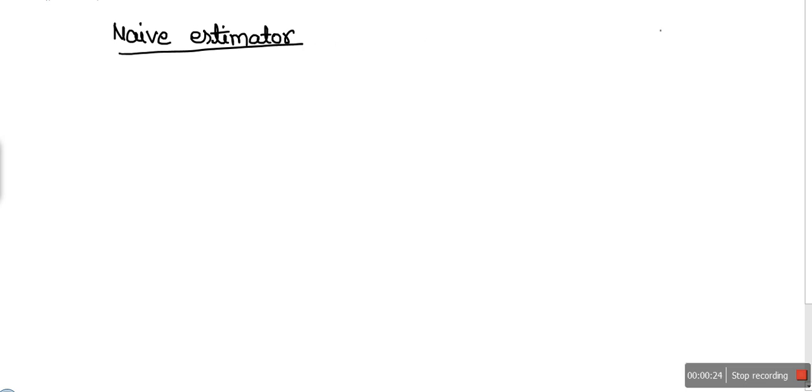In histogram estimator, we need the value of origin and bandwidth, and then we plot a histogram for the given data and compute the probability. In naive estimator, we don't need the origin; we just need the bin width.